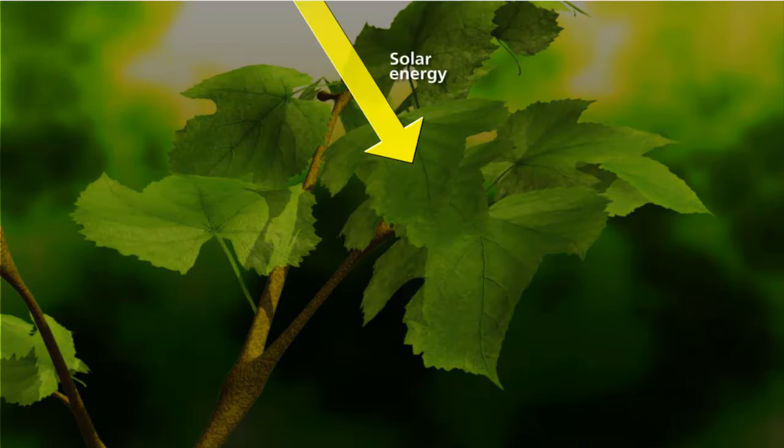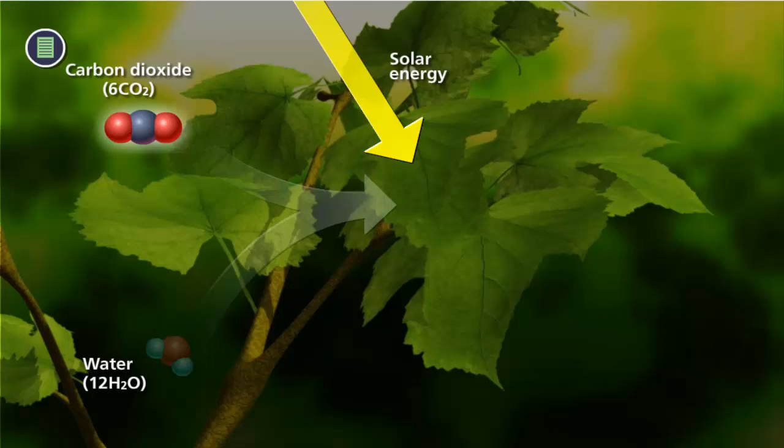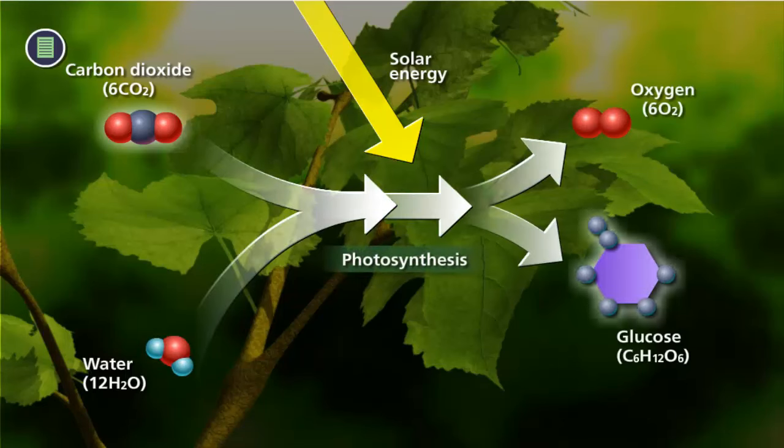When sunlight strikes a leaf, the energy in the sunlight is captured and used to convert six molecules of carbon dioxide gas from the atmosphere into the six-carbon sugar, glucose, which can be used as a source of energy for cellular reactions.